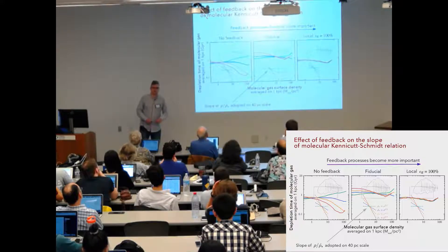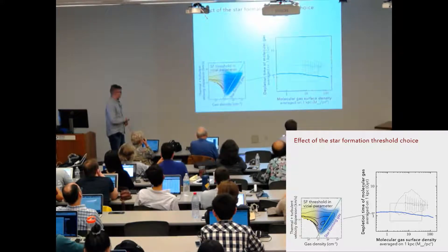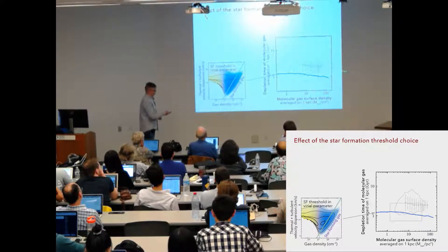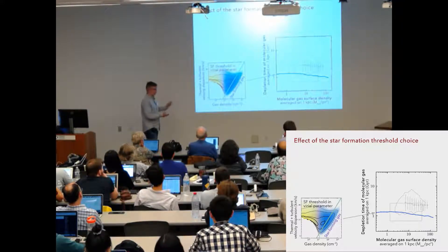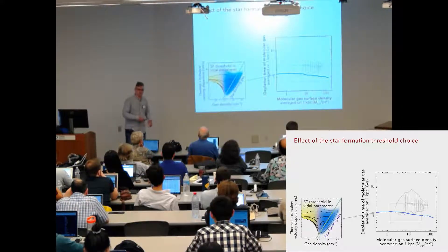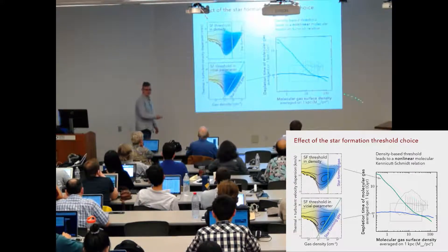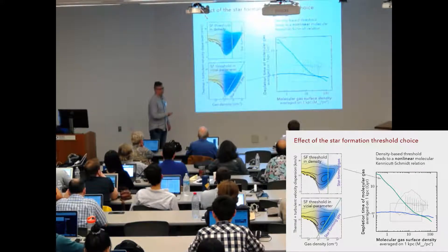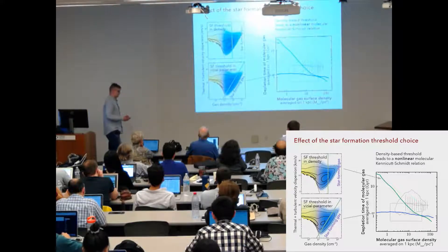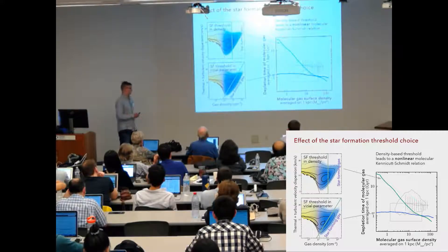However, it's not only feedback that is important. It's also very crucial how we do star formation details. As a reminder, in these simulations, we use a fixed threshold in virial parameter and we get this nice linear relation. But if we do exactly the same simulation with the same feedback, same star formation, local star formation prescription, but with a different threshold, with a threshold in density, we get a much steeper relation. We cannot reproduce the linear slope. This means that star formation and especially the choice of threshold might be done very accurately with great care.